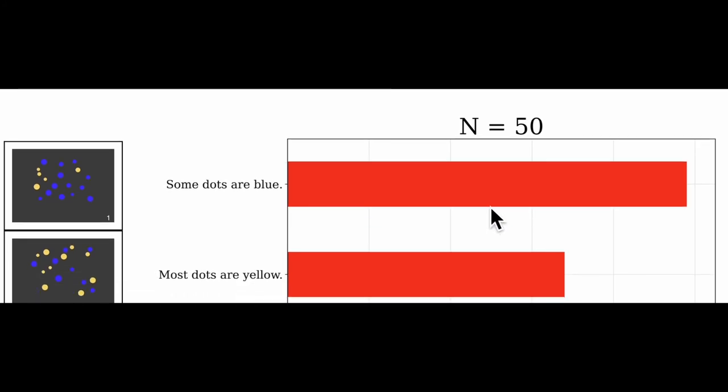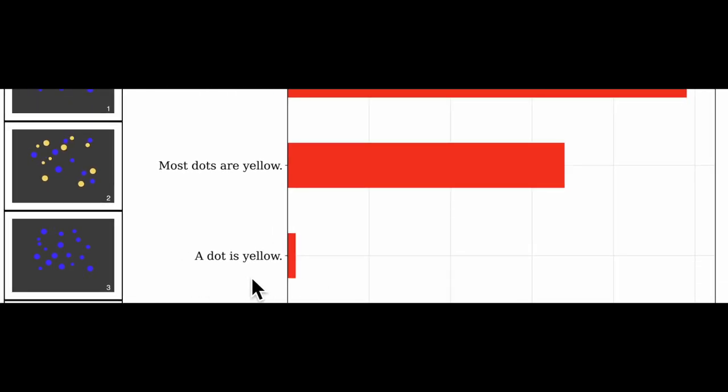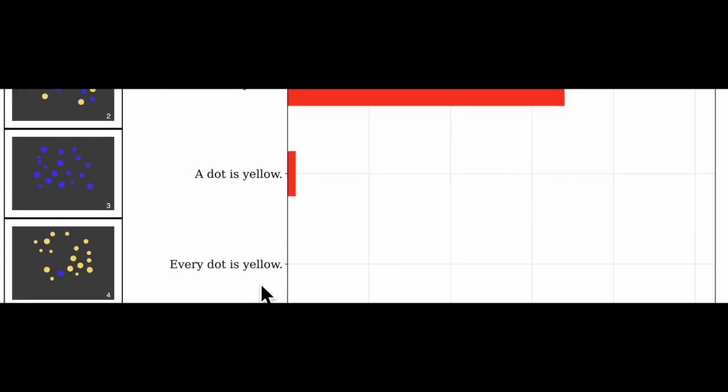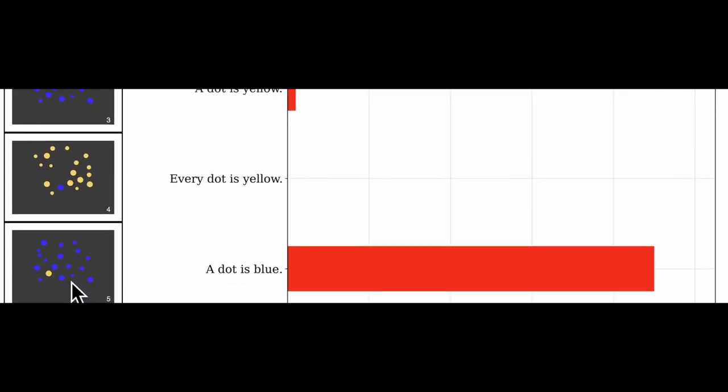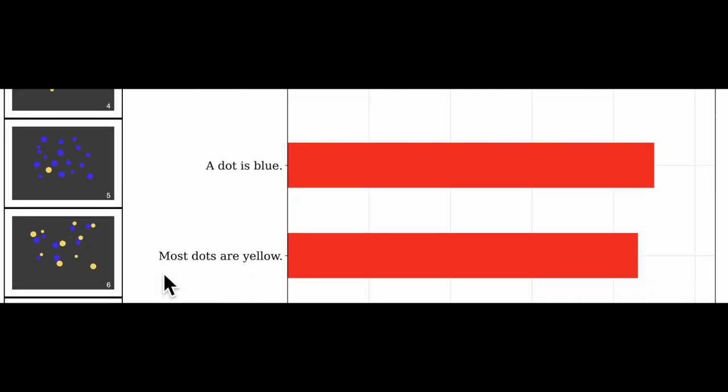So let's move on to the items from the experiment. Some dots are blue seems very systematic. Most dots are yellow is more mixed, consistent with what we'd expect for this complex and muddled display. A dot is yellow, no surprises there, it's false and essentially everyone saw that. Same for every dot is yellow, people spotted the blue dot it seems. So that's reassuring about the display mode here. A dot is blue. I thought we might see some interference between the singular 'a dot' and the abundance of blue dots, but it seems like that didn't really get in the way of people saying true for this item.